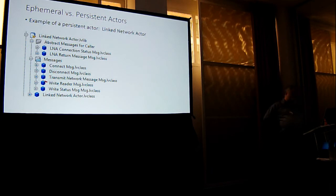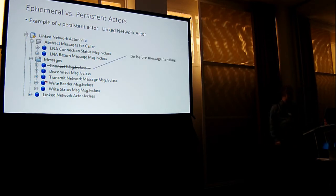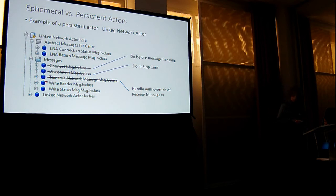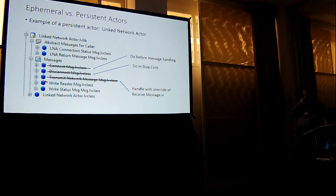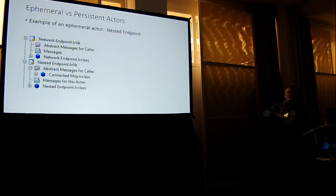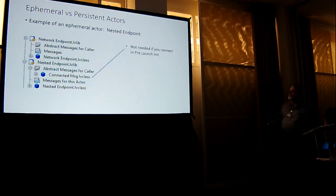If I change my perspective and say this actor is going to connect when it launches and disconnect when it stops, connect goes away because I do it before I start handling messages, and disconnect goes away because it's part of my shutdown process. I also got rid of transmit network message with an override of receive message. That left me with a nested endpoint as an ephemeral actor — it takes no messages, all it does is forward a message across the wire. I kept one abstract message to caller — the connected message — which tells its caller it's connected.